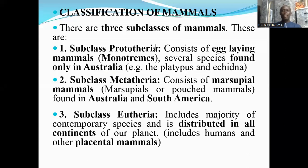There are three subclasses of mammals. These three subclasses are the subclass Prototheria, the subclass Metatheria, and the subclass Eutheria.